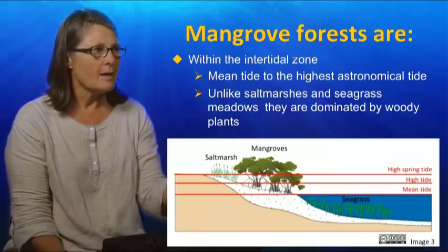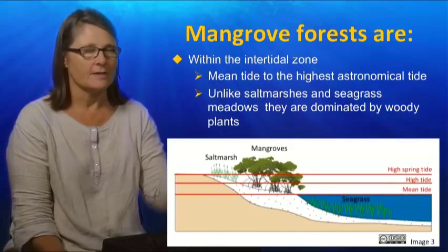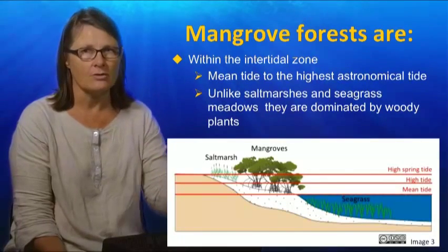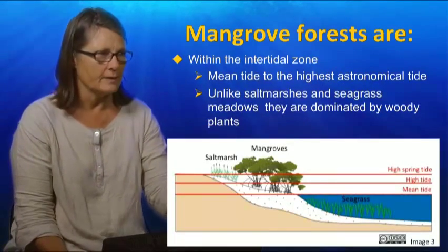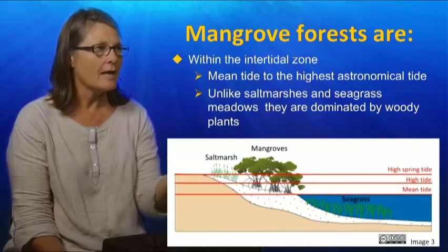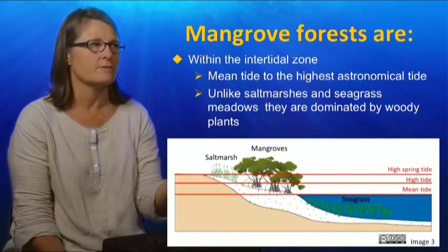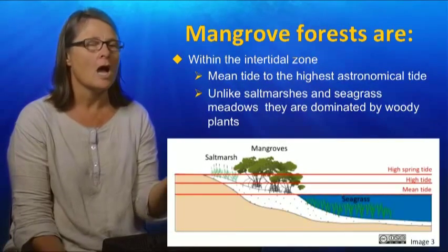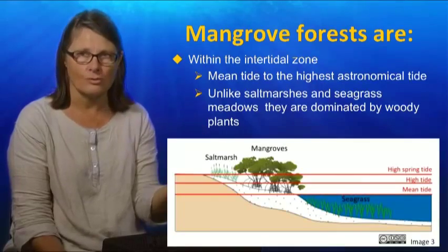Unlike salt marshes and seagrasses — and you can see that seagrasses occur below mean tide in this image — mangroves are woody plants; these are trees.